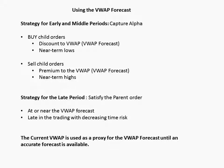Using the VWAP forecast, the strategy for the early and middle trading period is to capture alpha. To do this, we buy child orders when the market price trades at a discount to the VWAP or the VWAP forecast and at the near-term lows.